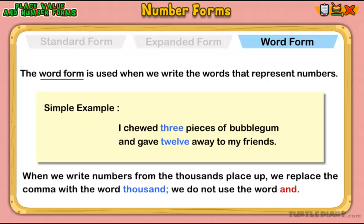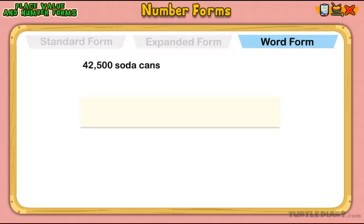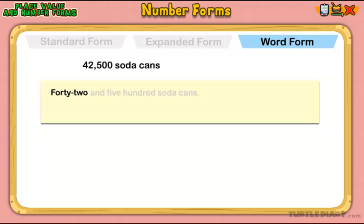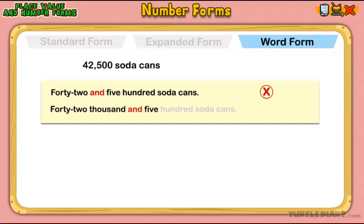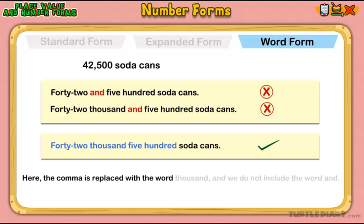Let's look at this example using the number 42,500. "Forty-two and five-hundred soda cans" — this is incorrect. "Forty-two thousand and five-hundred soda cans" — this is also incorrect. "Forty-two thousand five-hundred soda cans" — this is correct. The comma is replaced with the word thousand, and we do not include the word and.